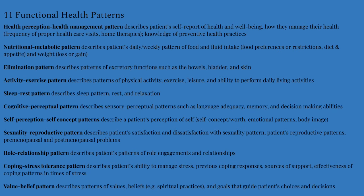Nine: role relationship pattern — describes a patient's pattern of role engagements and relationships. Ten: coping stress tolerance pattern — describes a patient's ability to manage stress, their previous coping patterns, their source of support, and the effectiveness of their coping in times of stress. Eleven: value belief patterns — describes patterns of values, beliefs, including spiritual practices, and goals that guide a patient's choices and decisions. Remember, this database can be used to assess any problem your patient may present.